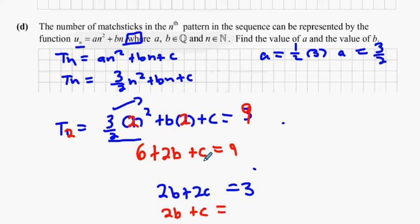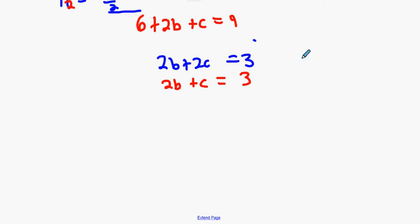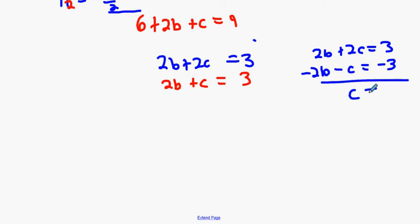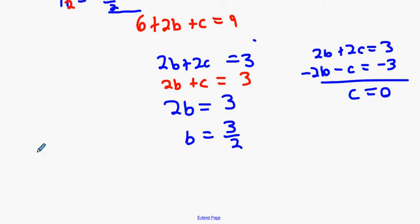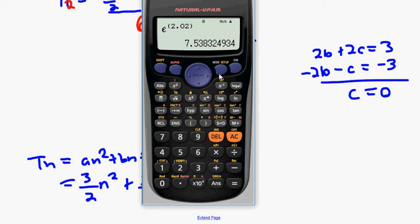Subtracting the equations: two b plus two c equals three minus two b minus c equals three, giving c equals zero. Since c equals zero, two b equals three, so b equals three over two. This changes the Tn formula to three over two n squared plus three over two n. Let's check in the table function: three over two x squared plus three over two x.